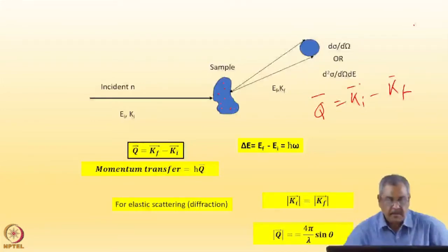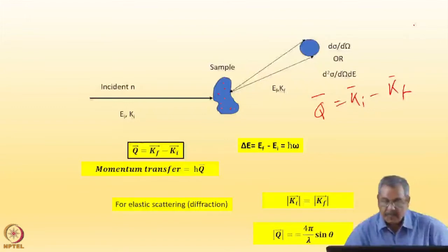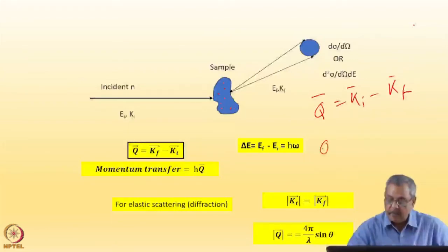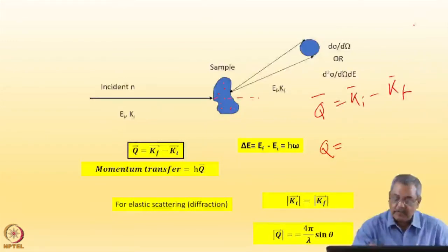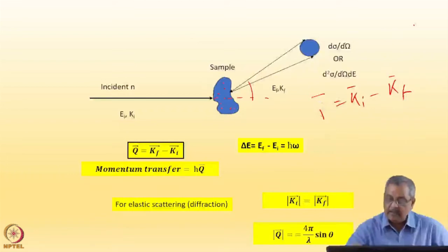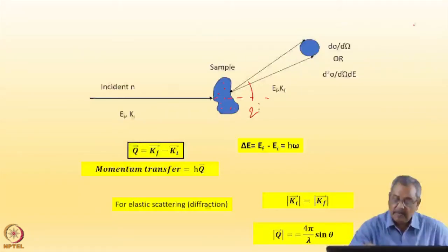The wave vector transfer Q is given by K_i minus K_f — they are all vectors, defining the direction of the incoming and outgoing neutron. Q is called the wave vector transfer. H-bar times Q is the momentum transfer. For an elastic experiment where the scattering angle is 2θ, Q is given by 4π/λ · sin θ. That is the magnitude of Q for elastic scattering in the case of diffraction, where the length of the wave vector remains the same.